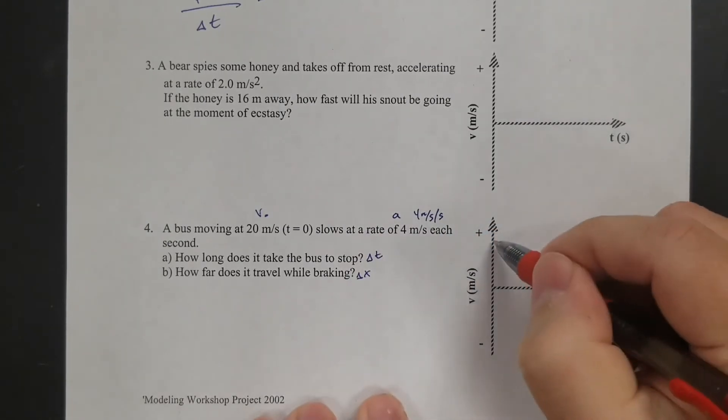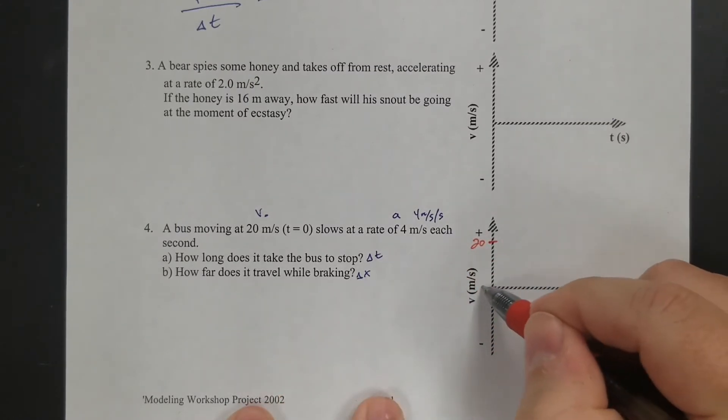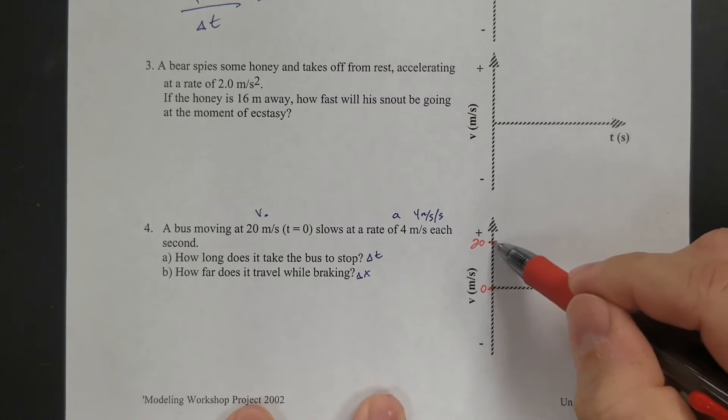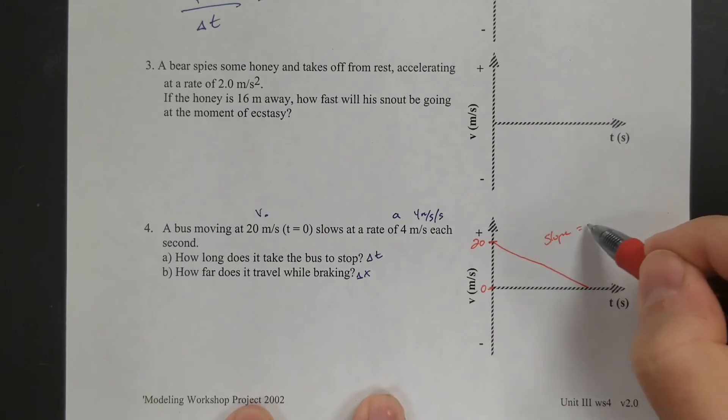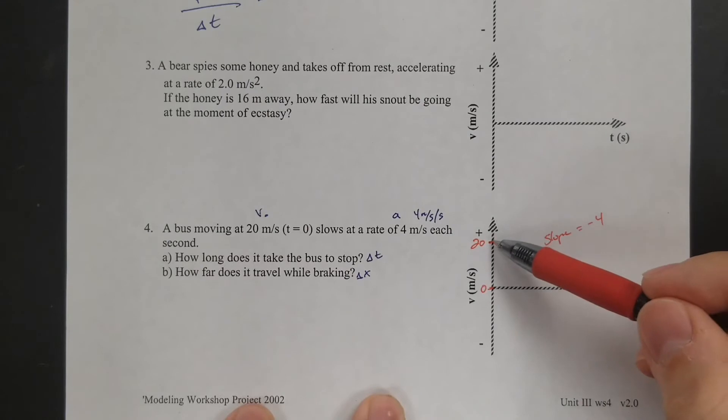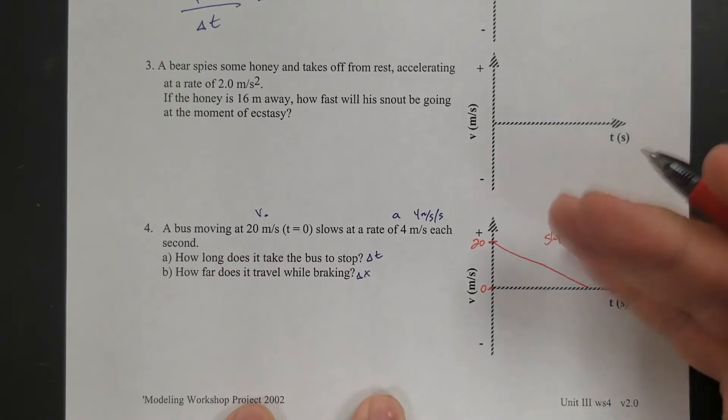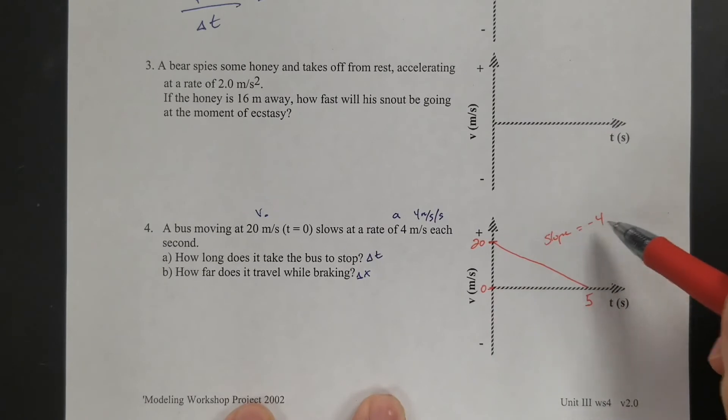So I'm going to do a graph first. So it's starting at 20 meters per second. And we want to know how long it takes to stop. So it's going to get to zero. And I know that it's going to slow down. I know the slope of this line needs to equal negative 4, because it's slowing at a rate of 4 meters per second each second. So if I start at 20 and my slope is negative 4, just using math skills, I can figure out that this has to be 5 seconds. Because with a slope of negative 4 at 20, it would go 16, 12, 8, what, 4, 0. So it would be 5 seconds.